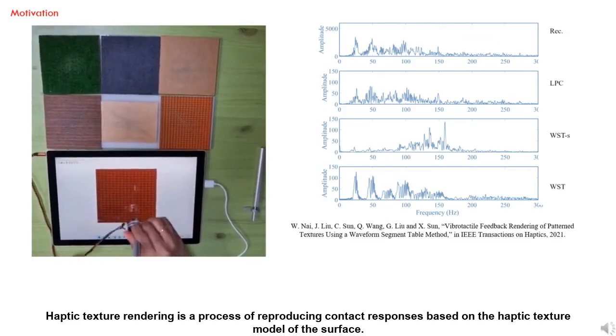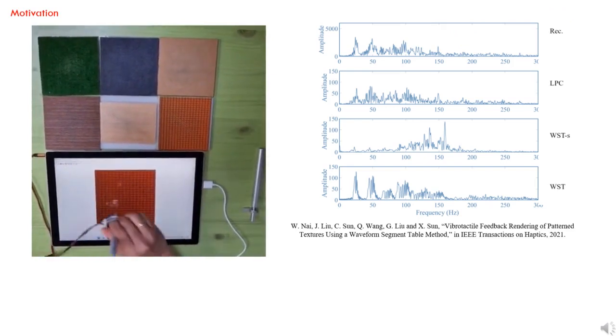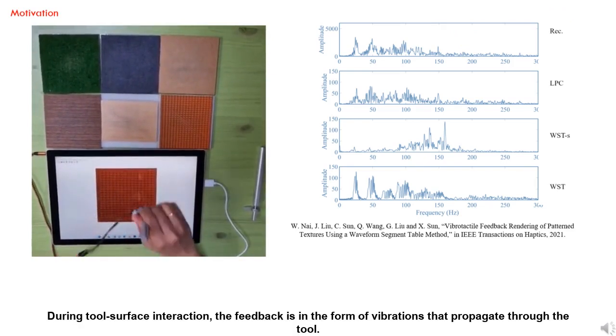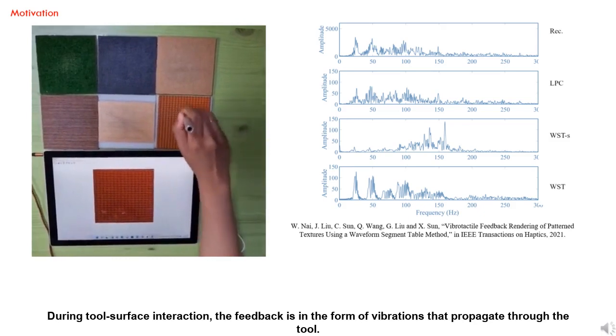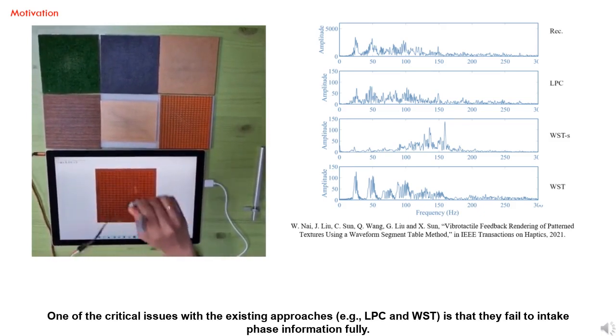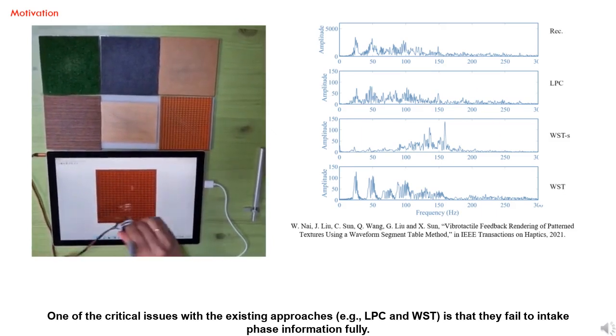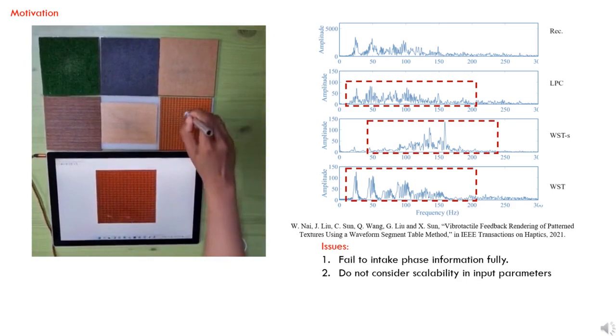Haptic texture rendering is a process of reproducing contact responses based on the haptic texture model of the surface. During tool-surface interaction, the feedback is in the form of vibration that propagates through the tool. One of the critical issues with existing approaches like LPC and WST is that they fail to intake phase information fully.